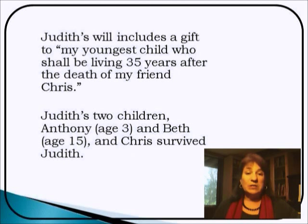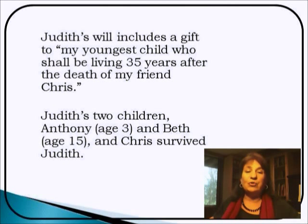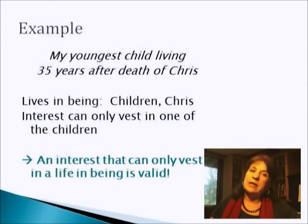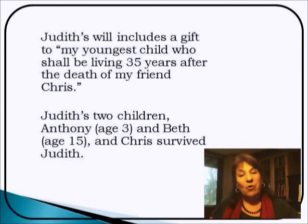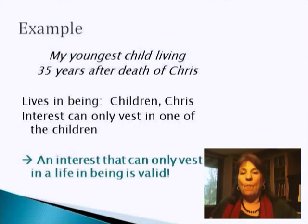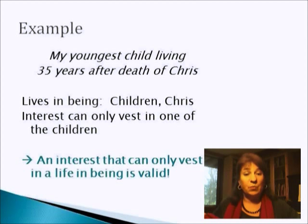Here's another example. Judith's will includes a gift to my youngest child who shall be living 35 years after the death of my friend Chris. Judith has two children, Anthony and Beth, and Chris the friend has survived Judith. I'm hoping that Chris is a person who has advanced in years, otherwise we're going to be waiting a very long time to see who's around. So who are the lives in being? Well, the children. This is Judith's will, so Judith is dead, so there aren't going to be any more children. So we've got the only children that matter. And Chris.